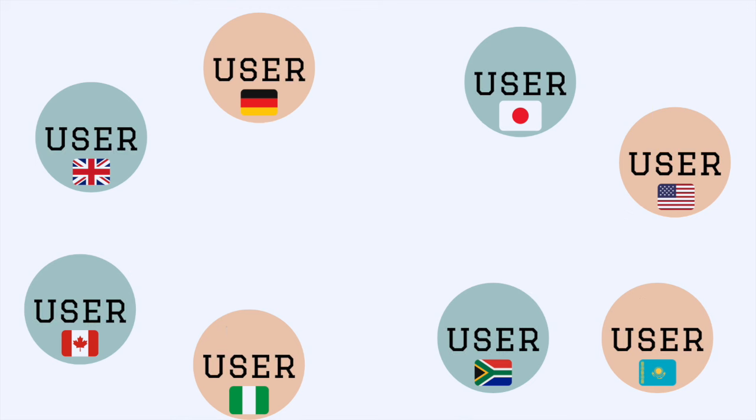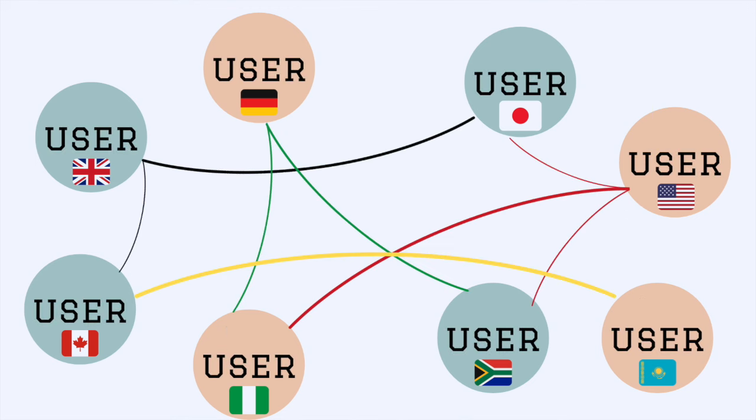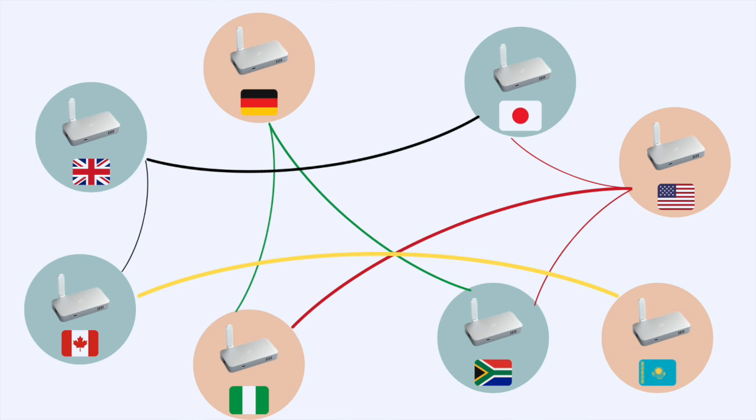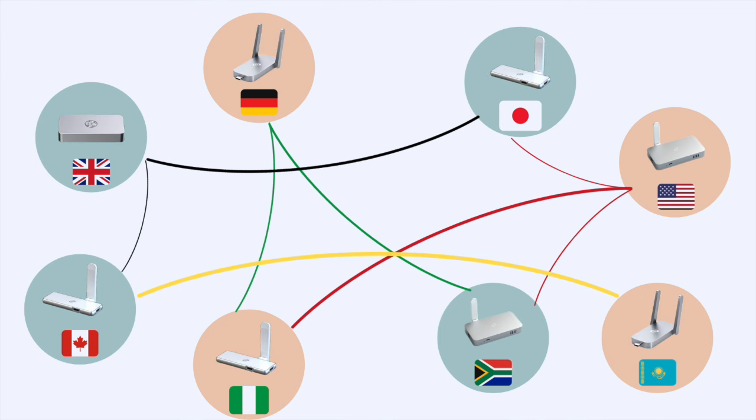In each of these homes, in each of these countries, there is a physical device that creates an infrastructure network. And with the deeper network, you have multiple devices that you can choose from to access, use, and share your internet.